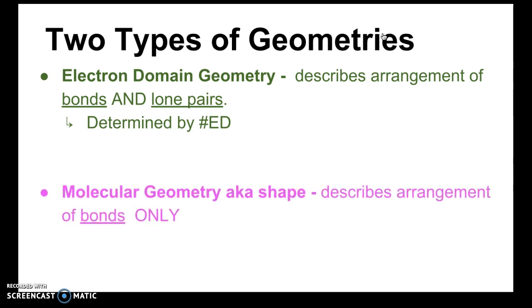Molecular geometry, also known as shape, describes the arrangements of bonds only — we ignore the lone pairs. To determine the molecular geometry we need to know how many lone pairs we are ignoring. So molecular geometry is determined by both the number of electron domains and the number of lone pairs. If two structures have the same number of electron domains and lone pairs, they will have the same molecular geometry.